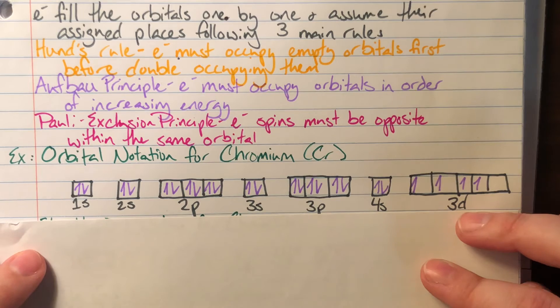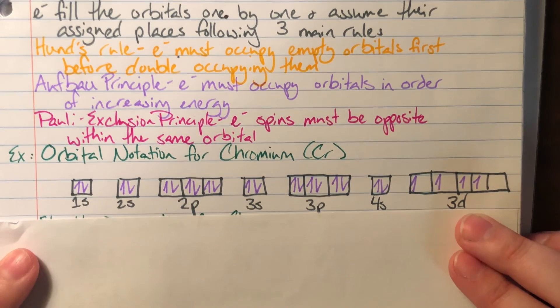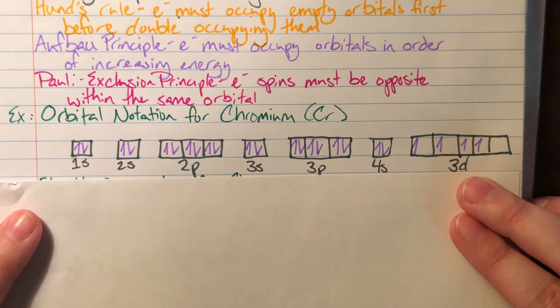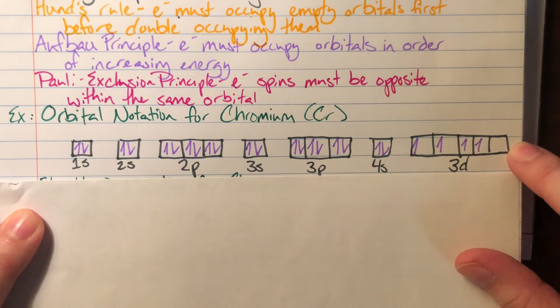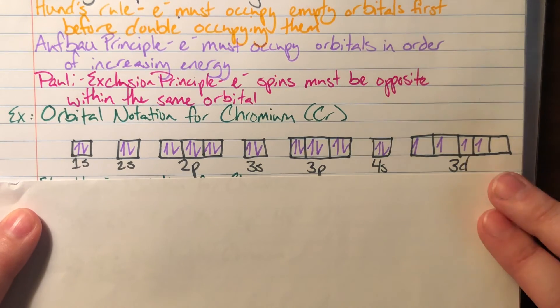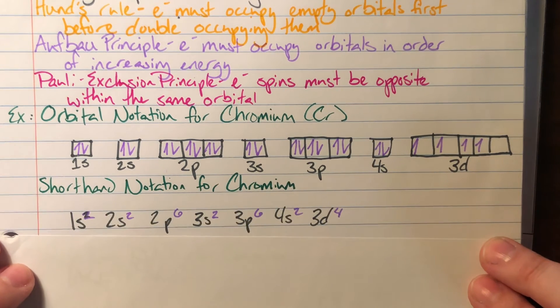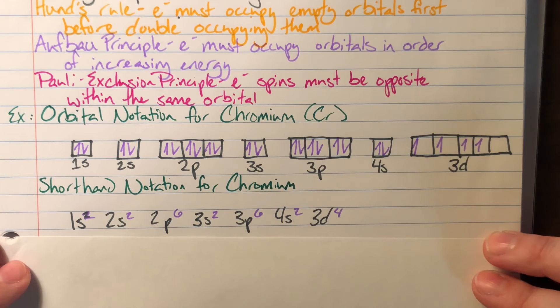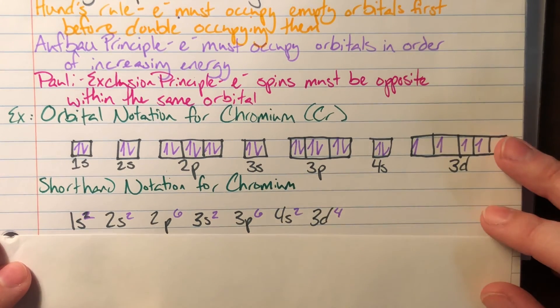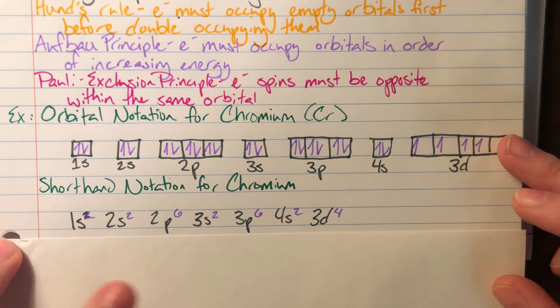Now, orbital notation is going to have the most information in it. It is the most helpful for predicting what is actually going to happen with bonding, because we can actually see the empty spaces where electrons can go. But sometimes we don't have time for that. And we are going to use a shorthand notation. This is actually the exact same atom as we saw for orbital notation.